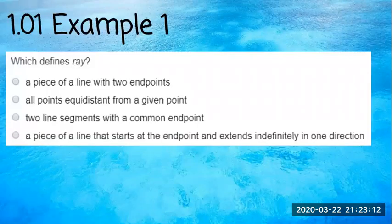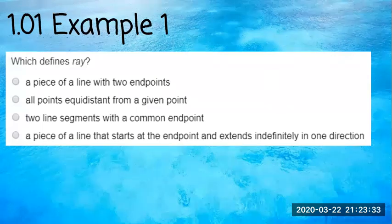Example 1 asks you to define what a ray is. A ray is not really a segment, not really a line — it's kind of like if they had a baby. You will have one direct point and then a line going off from that point with an arrow at the end. The option 'all points equidistant from a given point' would be a circle, so that's a no.